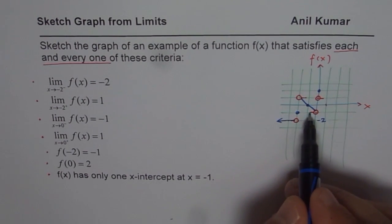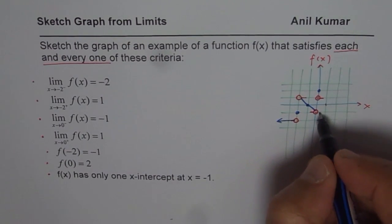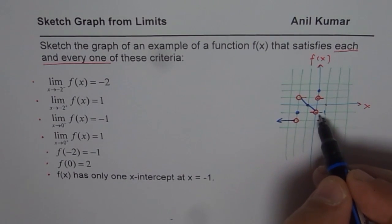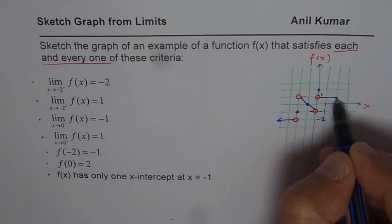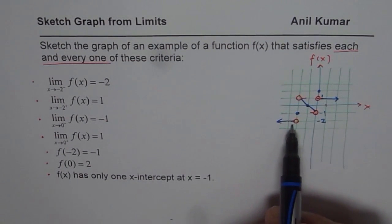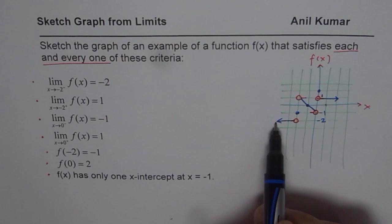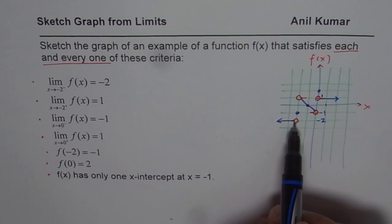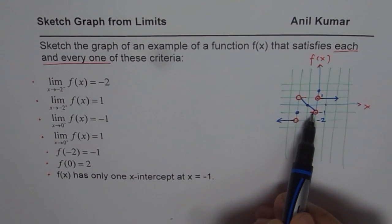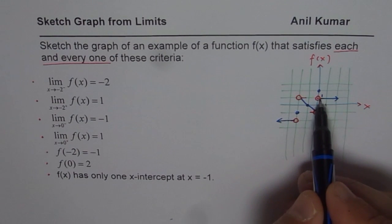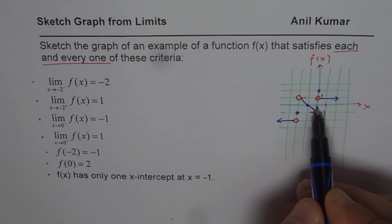At x = 0 approaching from the left, the line arrives at -1, which is correct. When approaching 0 from the right side, you approach +1, so from the right of 0 I continue with a horizontal line at y = 1 going to infinity. So the graph is: a horizontal line at y = -2 from minus infinity to x = -2, then a straight line with slope -1 from (+1 open hole) through the x-intercept at -1, ending at an open hole at (0, -1), and then a horizontal line at y = 1 for x > 0.